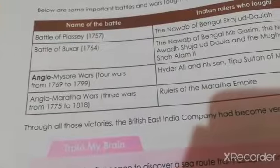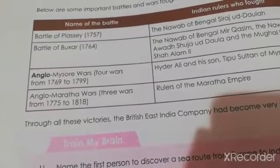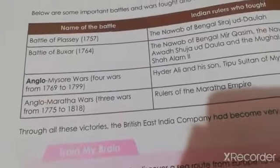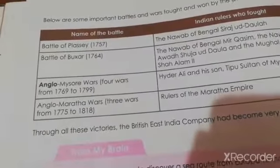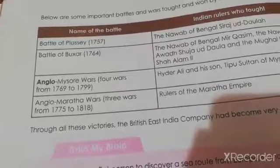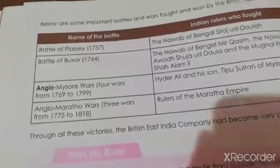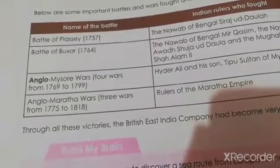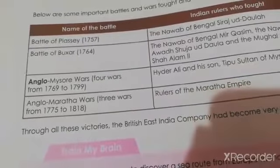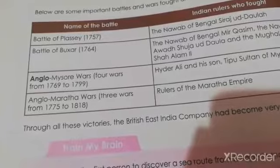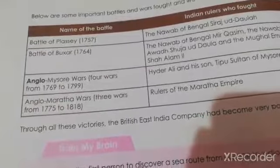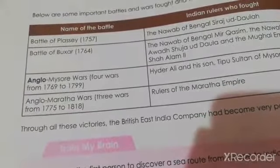These were the battles fought between the British and the Indian rulers. The first battle is the Battle of Plassey in the year 1757, fought between the British and the Nawab of Bengal, Siraj Ud-Daula.